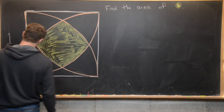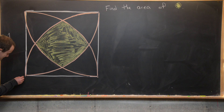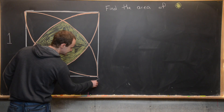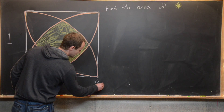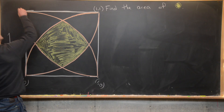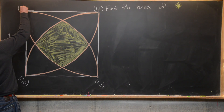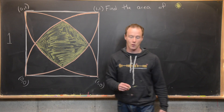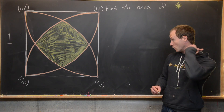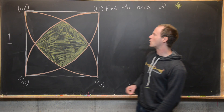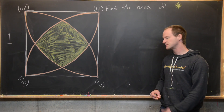Let's place this bottom-left point at the origin (0, 0), with (1, 0) at the bottom-right, (1, 1) at the top-right, and (0, 1) at the top-left — because we have a square with side length one.